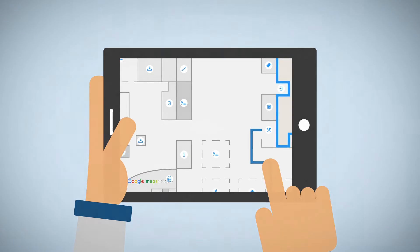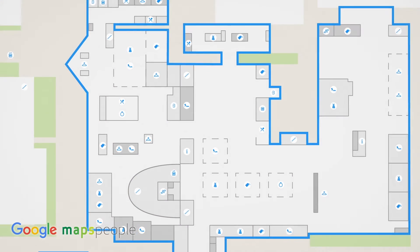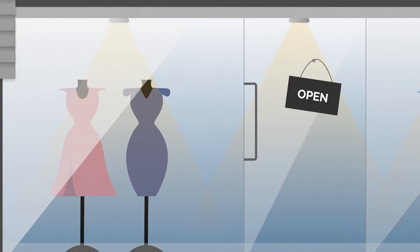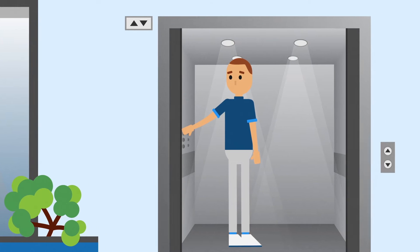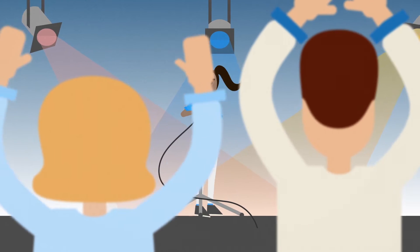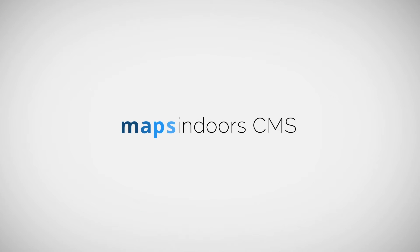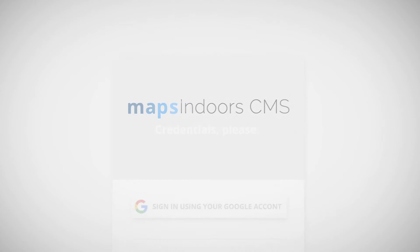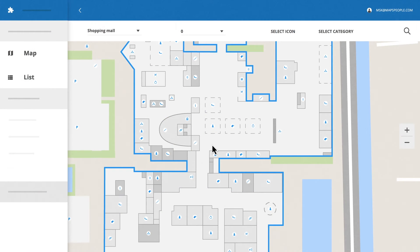But no indoor space is static, and neither should your map be. Shops close, new shops open, lifts are out of order from time to time, and various events influence the map layout. That's why we've built the Maps Indoor CMS, a user-friendly content management system which allows any admin user to easily edit the indoor maps of your venue.